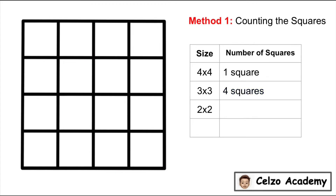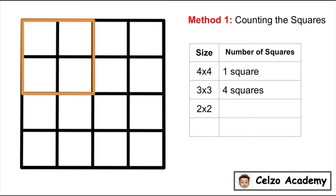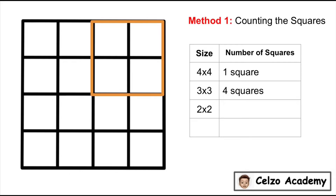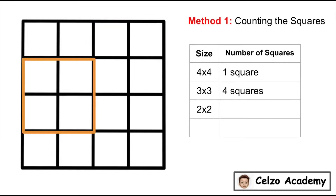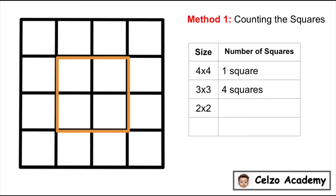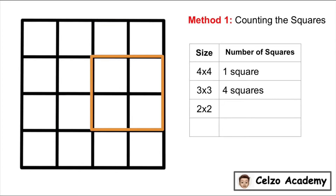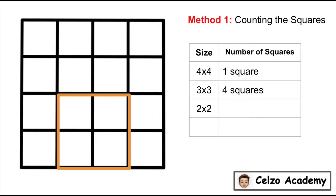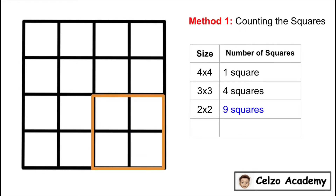Now let's count the 2x2 squares. How many 2x2 squares do you think we can have? 1, 2, 3, 4, 5, 6, 7, 8, 9. So there are 9 squares that are 2x2 in size.